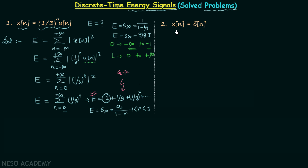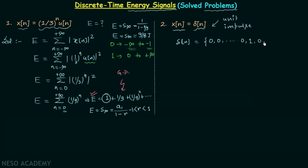Now we move on to the second problem. Here the discrete time signal Xn equals δ[n], the unit impulse. We know the unit impulse is equal to 0 from minus infinity up to minus 1. When n is equal to 0, δ[n] equals 1, and from 1 to plus infinity it remains 0. So we can write δ[n] equals 1 at n equal to 0, and the calculation of total energy is very easy: it equals mod(1) whole square.